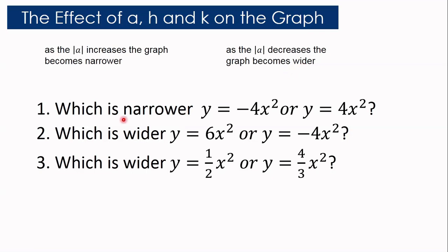Question number 1: Which is narrower — Y equals negative 4X squared or Y equals 4X squared? Neither. They have the same width in terms of the graph. The only difference is that Y equals negative X squared opens downward, and Y equals 4X squared opens upward. But in terms of width, they are just the same.